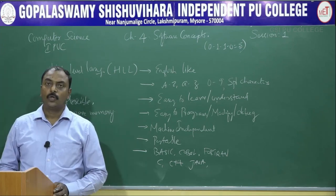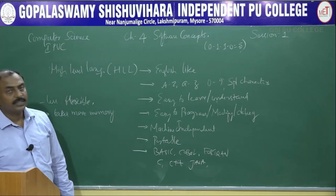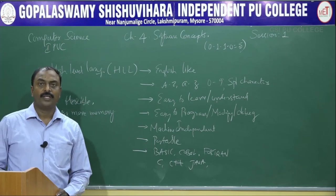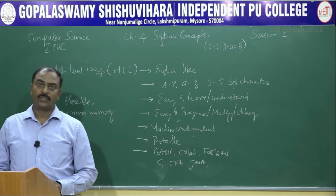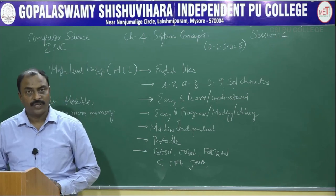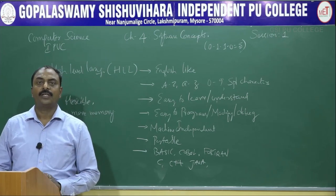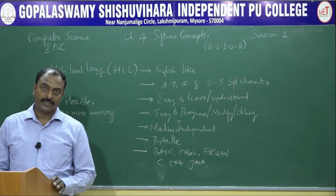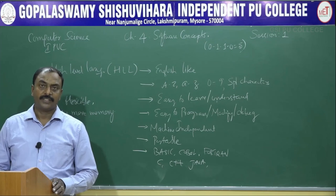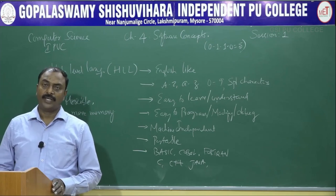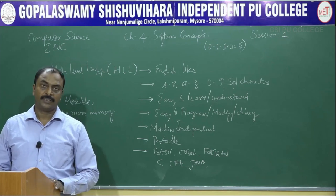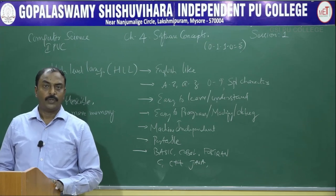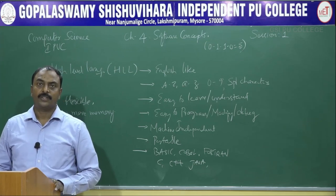Hope you have understood the concepts. In this session, I explained types of software, definition of software, application software, and system software. Under system software, there are three types: operating system, language translator, and utility software. I explained the operating system as an interface between the user and the computer. I will continue in my next session. Thank you very much.